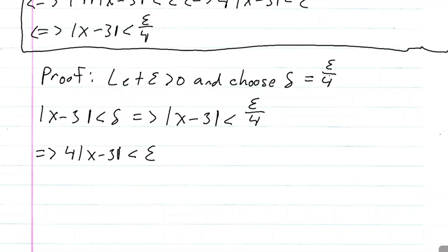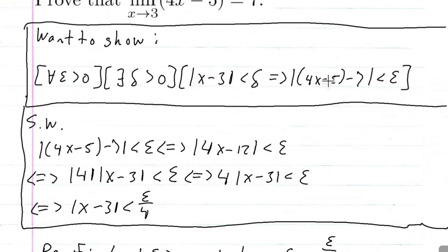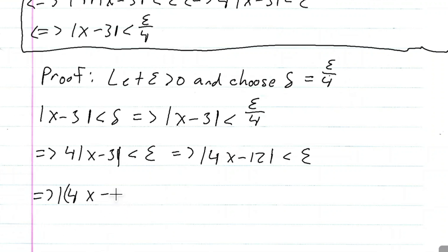Then we can distribute the 4 into the absolute value. This implies the absolute value of 4x minus 12 is less than epsilon. And then we rewrite 4x minus 12 as 4x minus 5 minus 7, so the absolute value of 4x minus 5 minus 7 is less than epsilon.